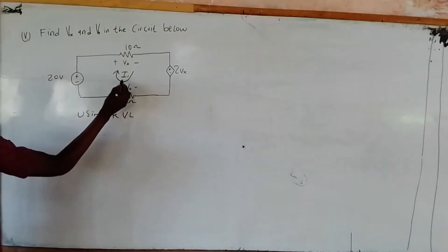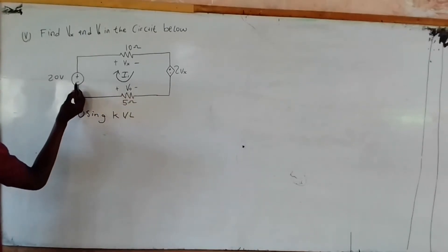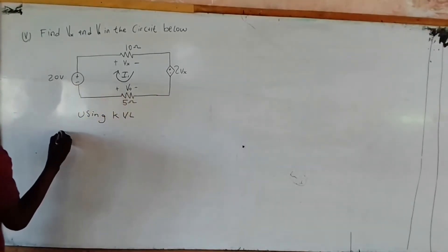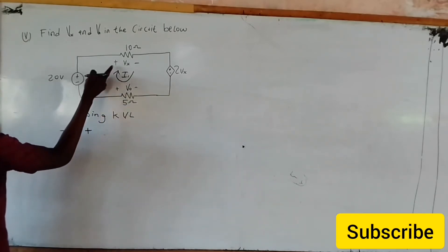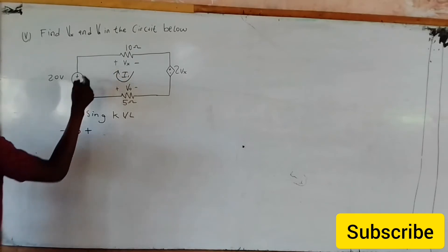I'll start as it passes to -20V. So minus 20. Then it comes to here and becomes plus. At this point it becomes plus.